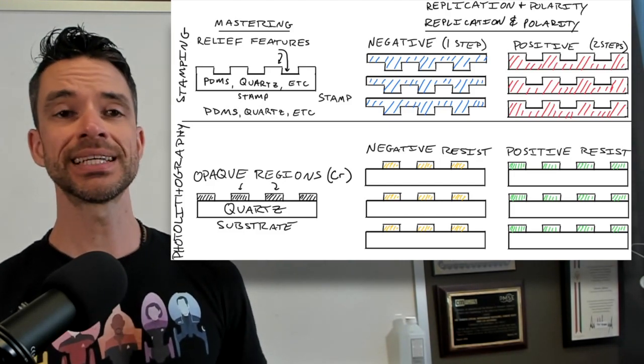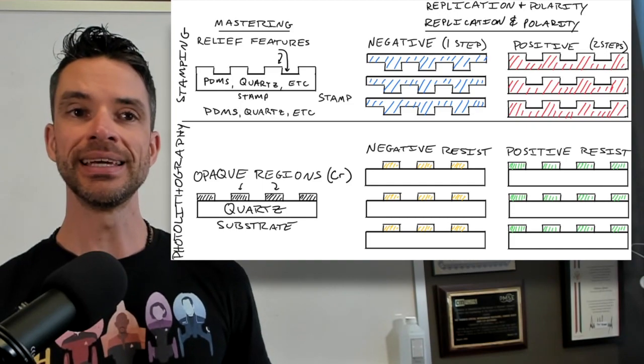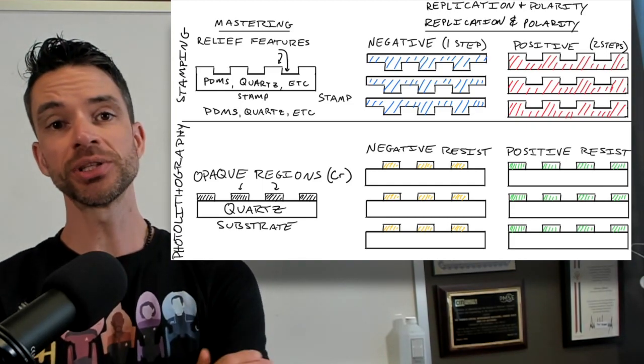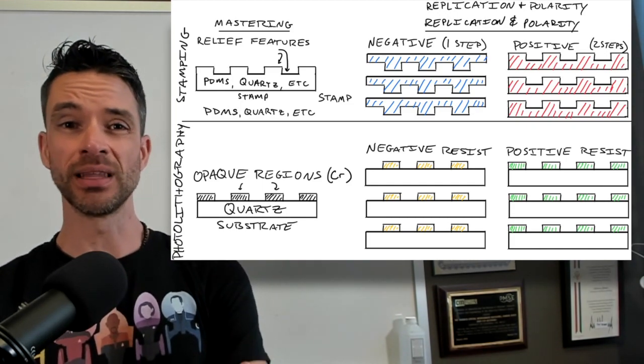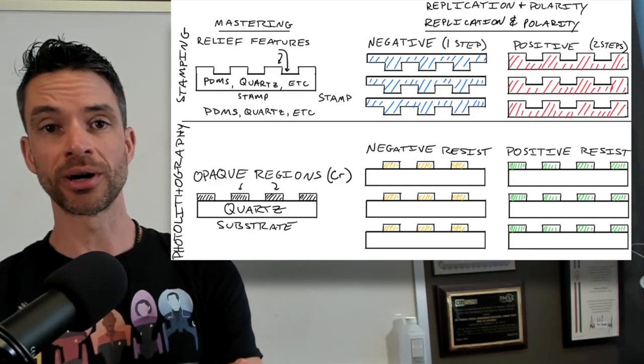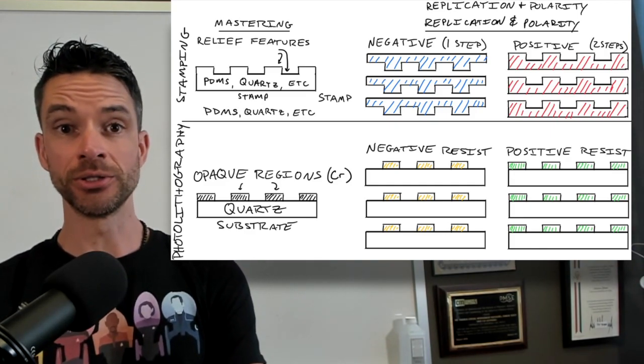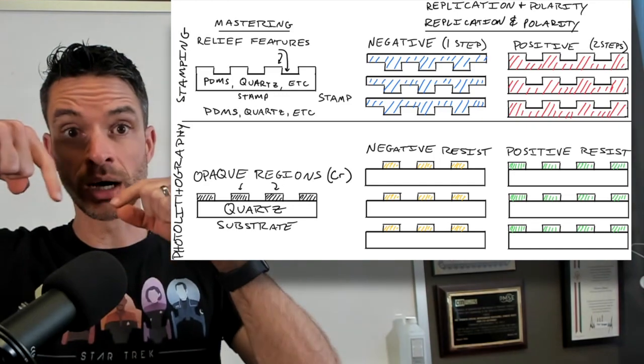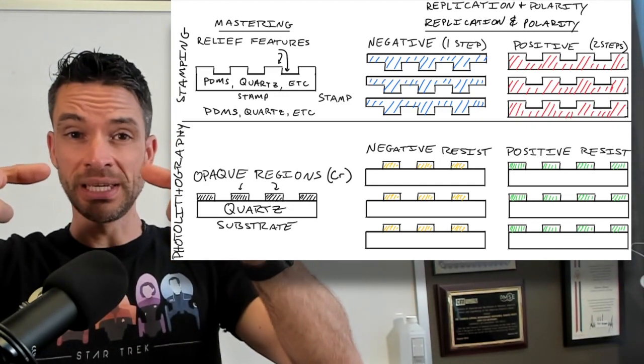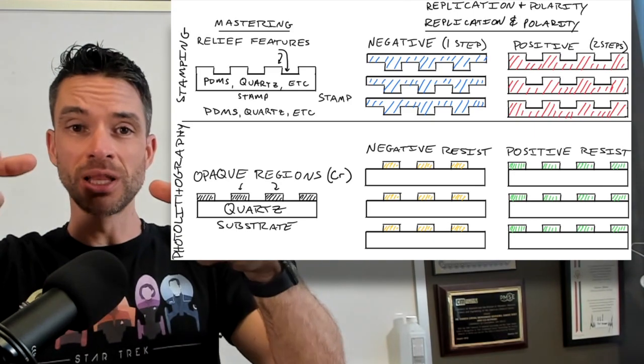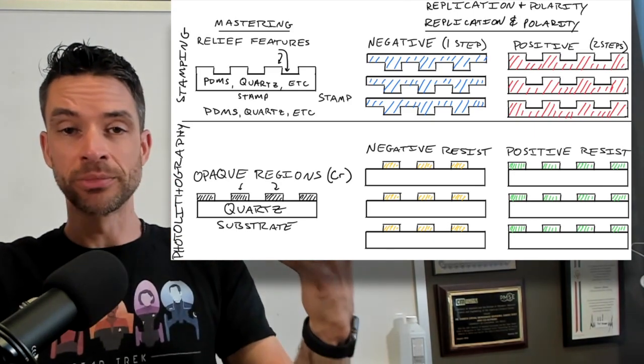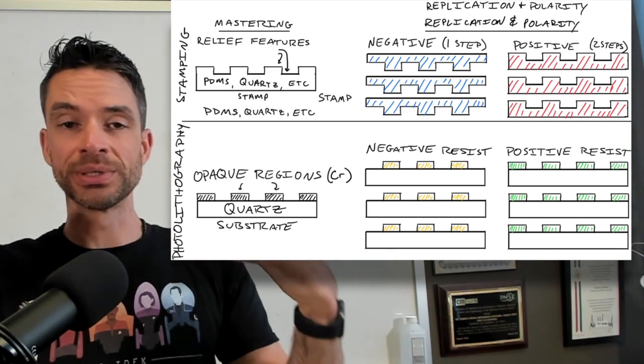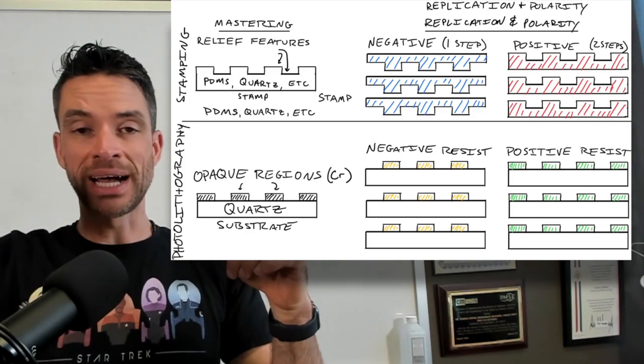In the context of nanofabrication, the mastering step is usually done through something like electron beam lithography, which is where you shine an electron beam on the surface of an electron beam sensitive polymer layer called an electron beam resist or an e-beam resist. And that generates patterns.